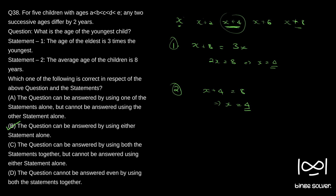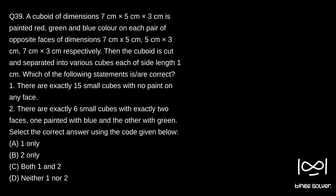Next question, question 39. A cuboid of dimension 7 cm × 5 cm × 3 cm is painted red, green and blue color on each pair of opposite faces of dimension 7 cm × 5 cm, 5 cm × 3 cm, and 7 cm × 3 cm respectively. Then the cuboid is cut and separated into various cubes each of side length 1 centimeter.